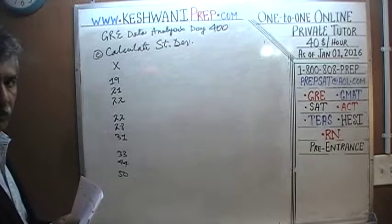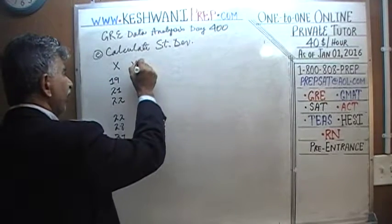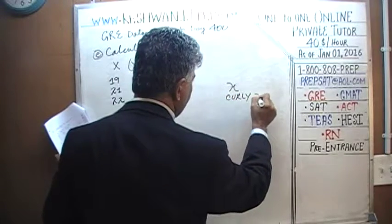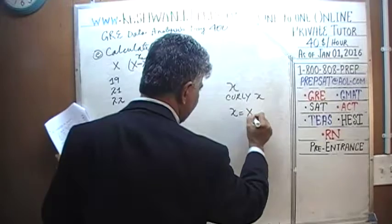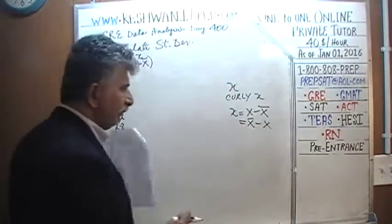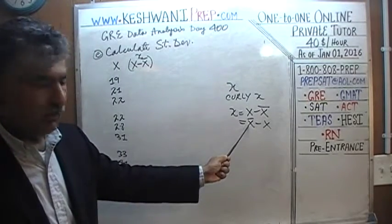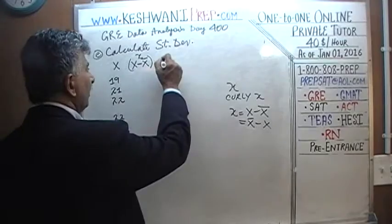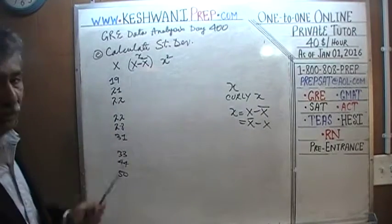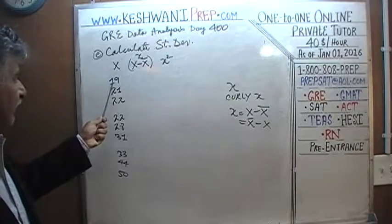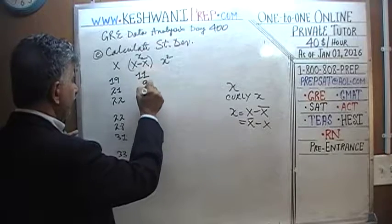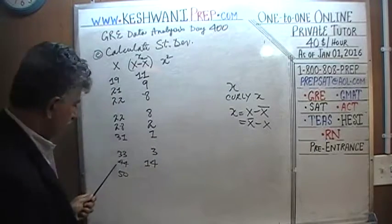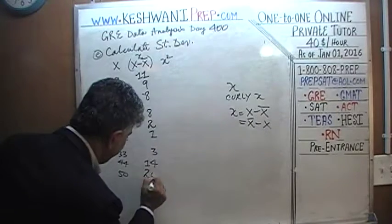The mean was 30. We calculate the deviation from the mean — x minus x-bar (called 'curly x'). It doesn't matter whether you subtract the mean from the observation or vice versa, because we're going to square the deviations anyway. The deviations are: 11, 9, 8, 8, 2, 1, 3, 14, and 20.